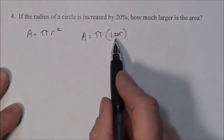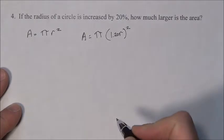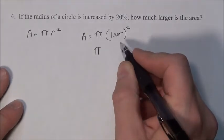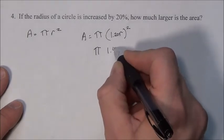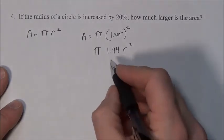That's 120% because it's going to be all of it plus an extra 20%, and that all is going to get squared. When we do this, 1.20 or 1.2 times itself gives you 1.44r².